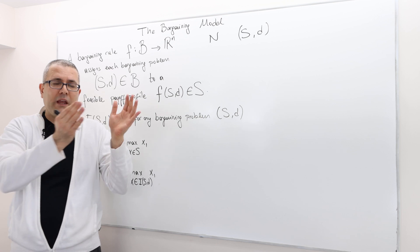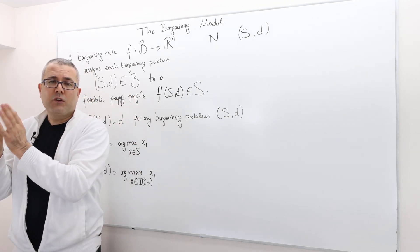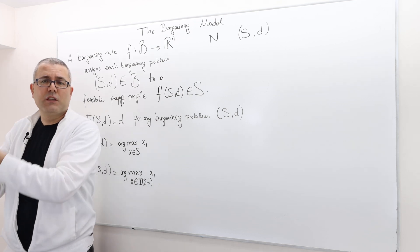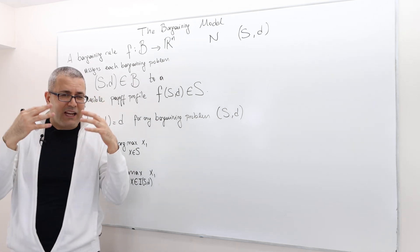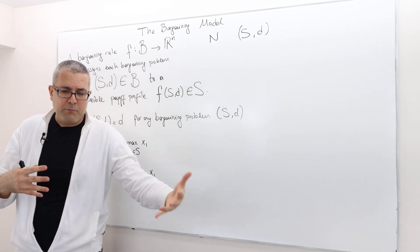Therefore, for any given problem, we need to know a potential outcome or potential solution. That defines a rule. For each bargaining problem, the rule assigns some solution.